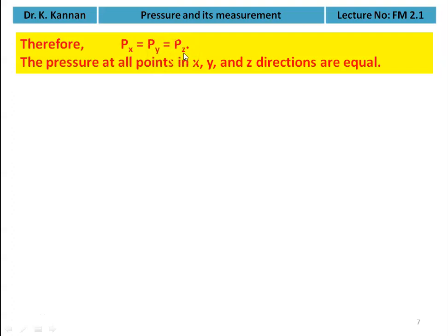All pressures are equal — px is the pressure in the x-direction, py in the y-direction, and pz in the z-direction. Thus, in a static fluid, pressure in all directions is equal. Pascal's law is proved.